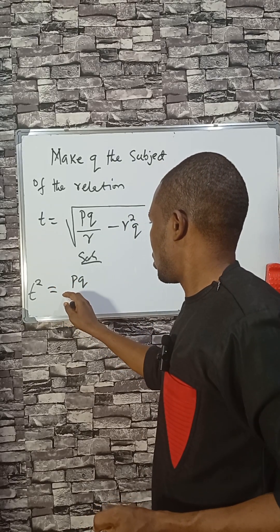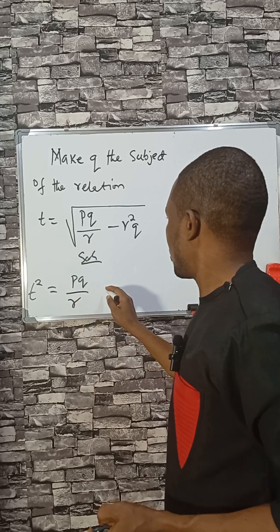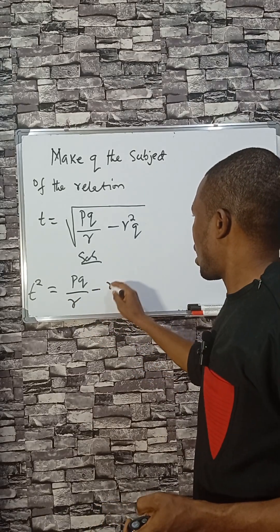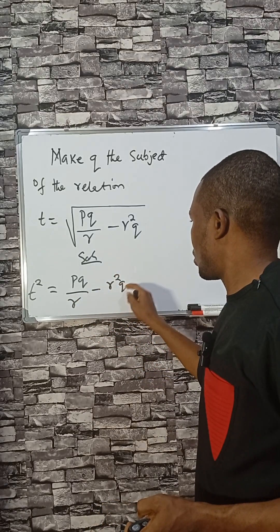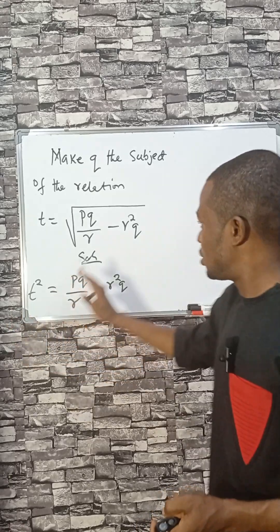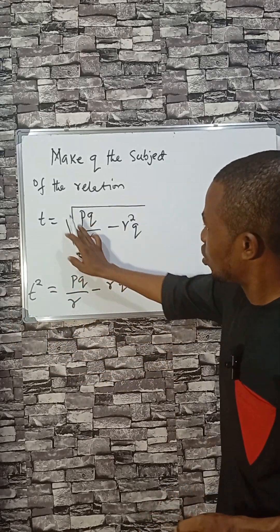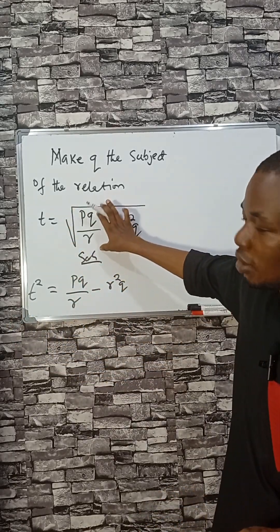divided by r minus r squared q. Taking the square of both sides takes the square root sign off this expression.